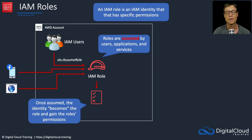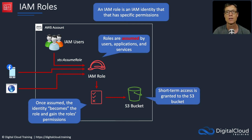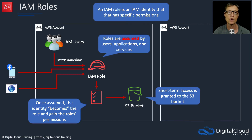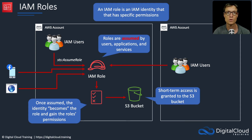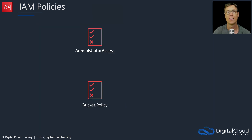Once assumed, the identity becomes the role and can access AWS resources as if they have the permissions applied to that role. The access is short-term — it uses the Security Token Service (STS) and you receive short-term credentials that last a specific period and are then automatically renewed. You can also use this across AWS accounts, so users in another account can assume the role and access resources as if they were that role.